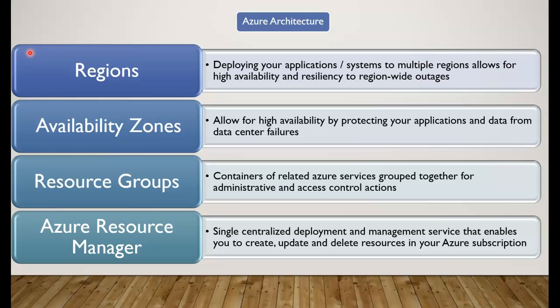With availability zones, we're really trying to protect ourselves from a single data center failure by making sure that our applications and services are deployed to at least two data centers in two different availability zones. With our lesson on Azure regions, we took a step further and learned how regions include multiple availability zones within their own multiple data centers. We also learned how we can deploy our applications and systems to multiple regions combined with availability zones to protect against a single data center failure.